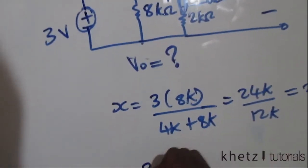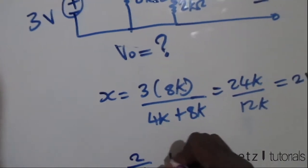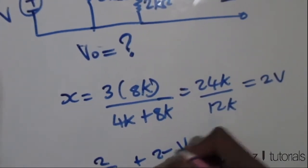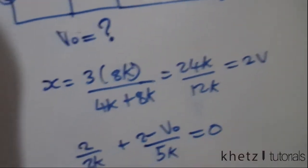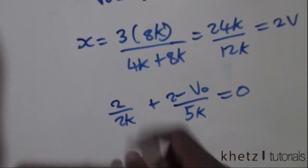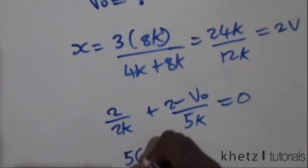You're going to say 2 divided by 2k plus 2 minus 2VO divided by 5k equals 0. Then I'm going to multiply through by 10k.